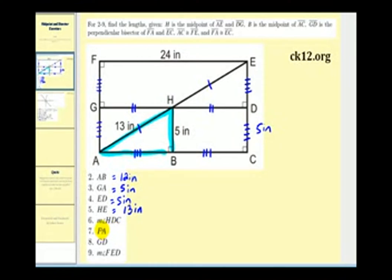Number six, we want to determine the measure of angle HDC. Angle HDC is this angle here, and because angle HDC and HDE are a linear pair, they would be supplementary, and if angle HDE is 90 degrees, angle HDC would also be 90 degrees.